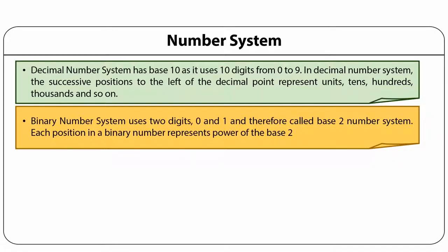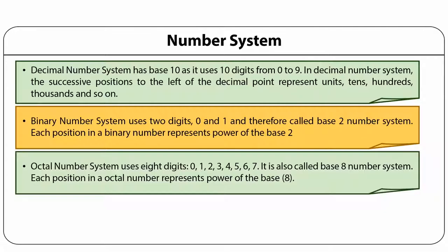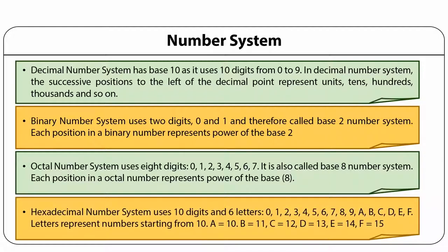The octal number system uses 8 digits — 0 to 7 — and is also called the base 8 number system, where each position in an octal number represents a power of the base. The hexadecimal number system uses 10 digits and 6 letters, totaling 16 symbols — from 0 to 9 then followed by A, B, C, D, E, F — where letters represent numbers starting from 10: A equals 10, B equals 11, C equals 12, D equals 13, E equals 14, and F equals 15.